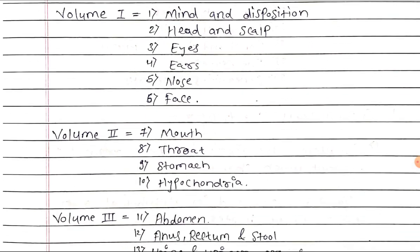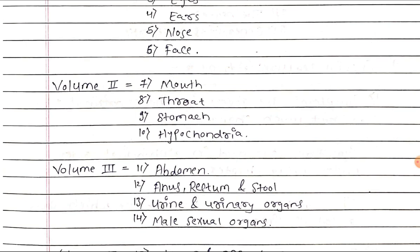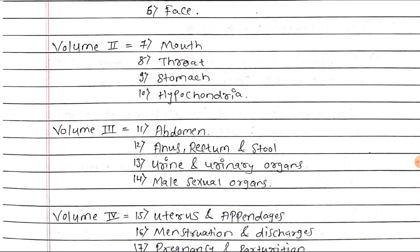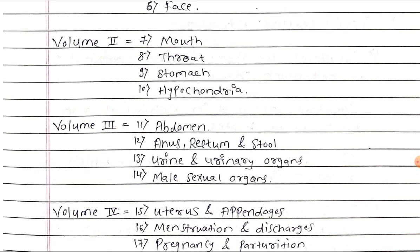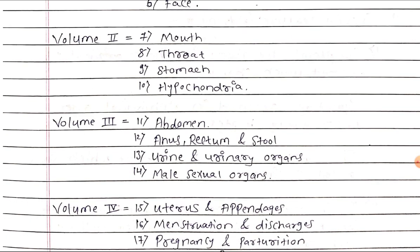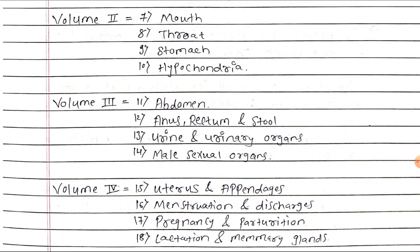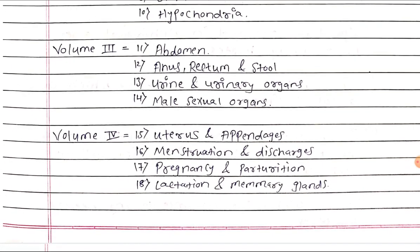Volume 2 contains: 7th — mouth, 8th — throat, 9th — stomach, and 10th — hypochondria. Volume 3 contains: 11th — abdomen, 12th — anus, rectum and stool, 13th — urine and urinary organs, and 14th — male sexual organs.